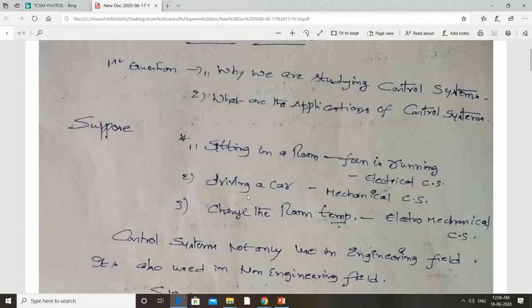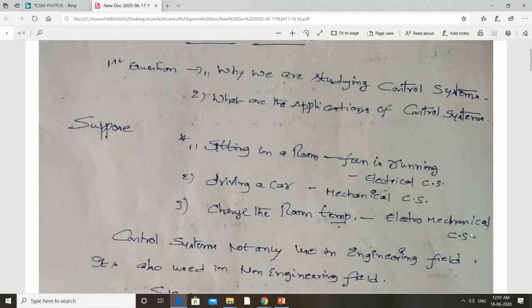Suppose I am driving a car. Due to traffic, I have to change the speed frequently and I can control the speed using the accelerator. This is an example of a mechanical control system. Third one is changing the room temperature — for example, sitting in a room and changing the temperature to 23 degrees centigrade using air conditioning. Air conditioning has a thermostat controlled by electrical signals, so that is an example of an electromechanical control system.